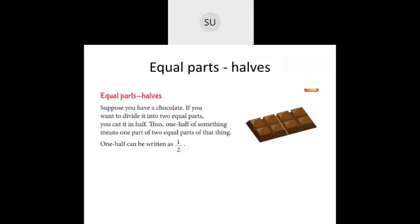Now let's see what equal parts or halves are. If there is a chocolate and you want to divide it equally between you and your friend, you will cut that chocolate into two halves. Here we have a chocolate bar with eight pieces. For both you and your friend to get equal number of chocolates, you divide it into half — so you get four pieces and your friend gets four pieces. That is half and half, which means equal parts.